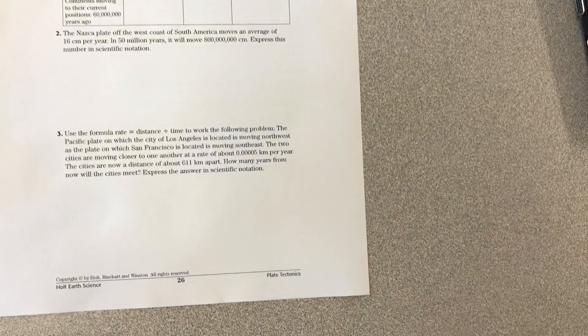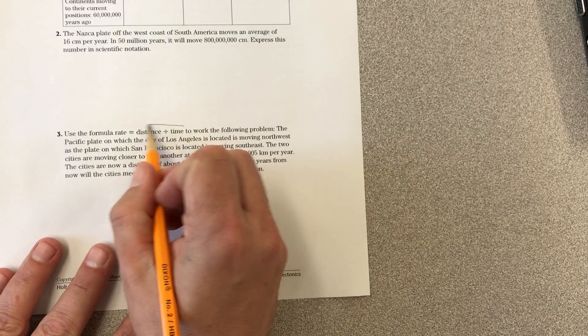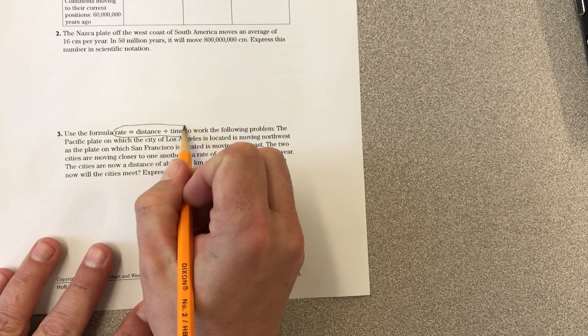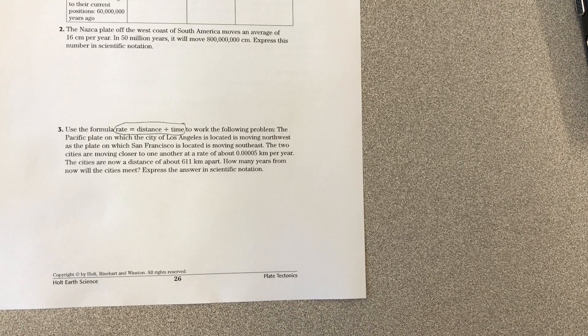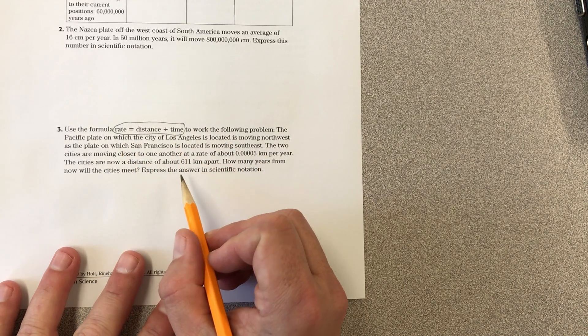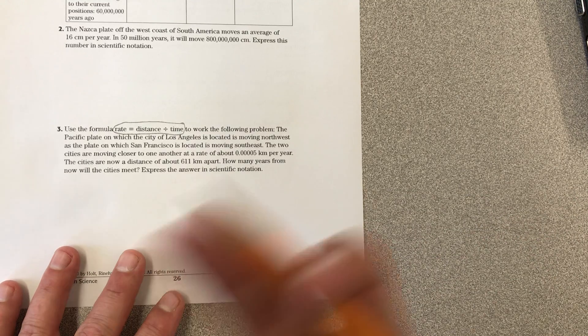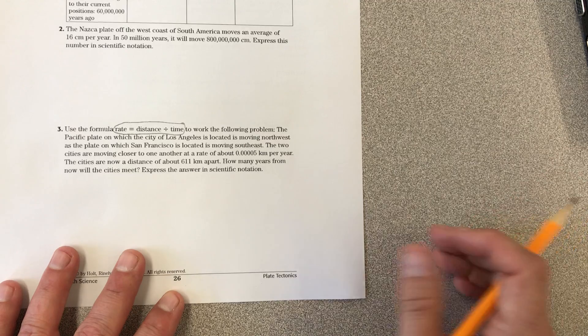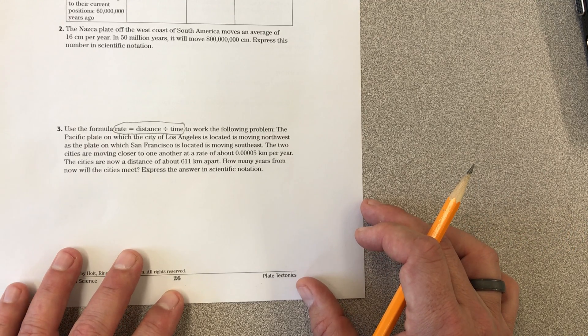In problem 3, you have to enter some numbers into this formula: rate equals distance divided by time. If you read through this example, it actually talks about what we were talking about in that plate tectonics video, which is Los Angeles and San Francisco and the two plates: North American plate and the Pacific plate.